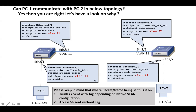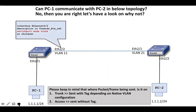PC1 can reach PC2 even though they are in different VLANs. The reason is that the interlink between EVA Switch 1 and Switch 2 is configured as an access port — one side in VLAN 11, the other in VLAN 21. Therefore they are able to ping each other even though the VLANs are different. Now let's look at the same topology with slight configuration changes.